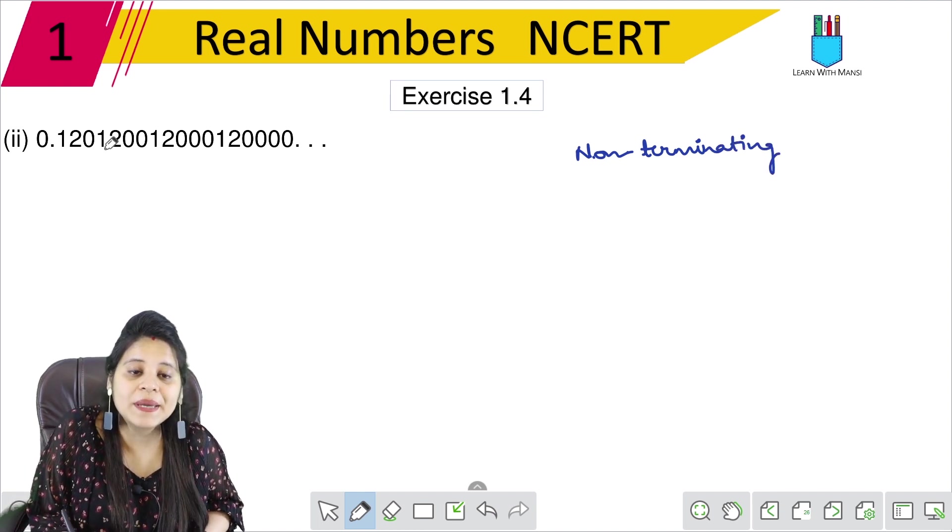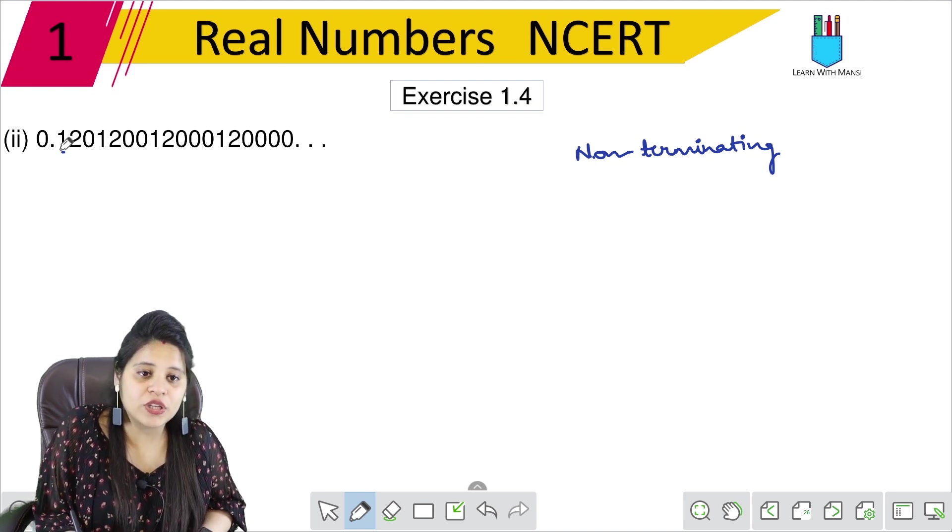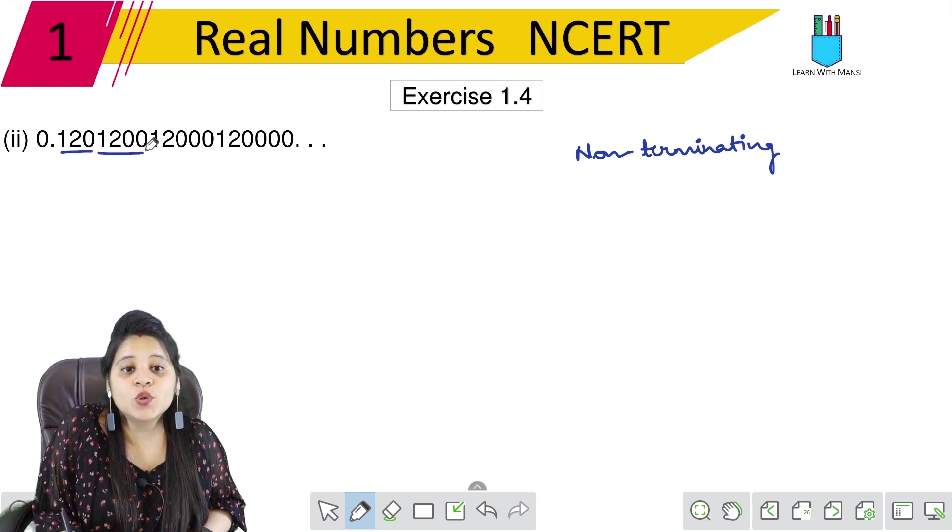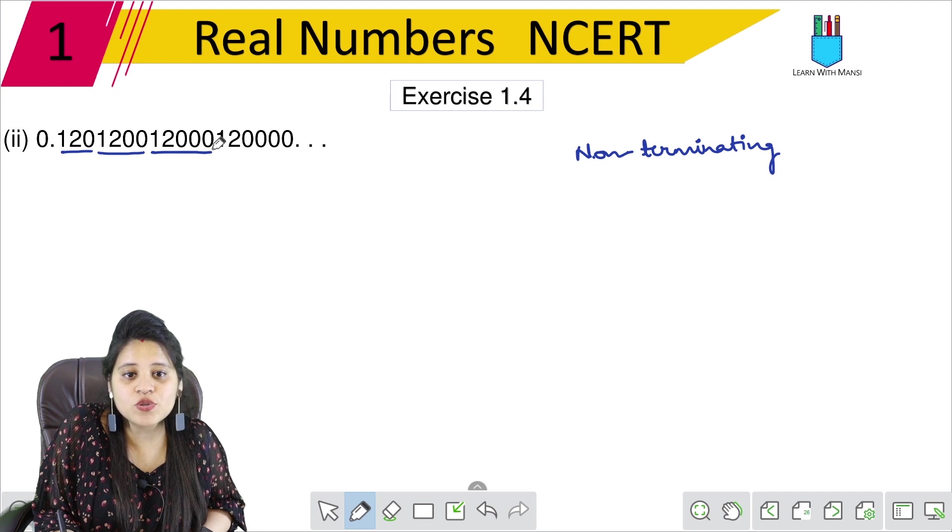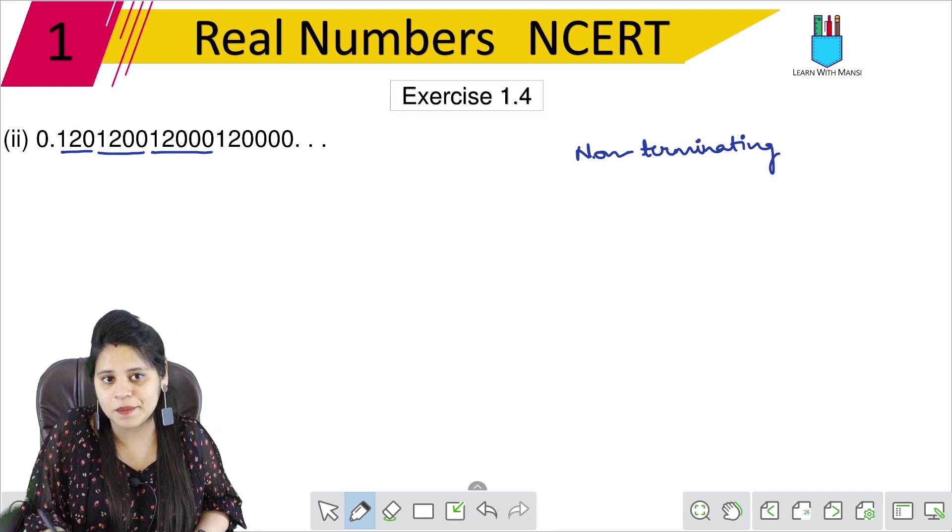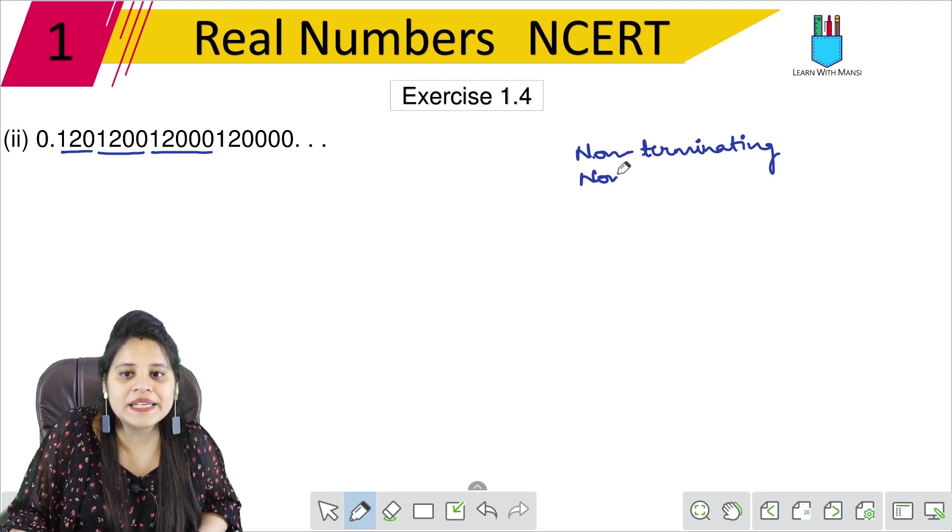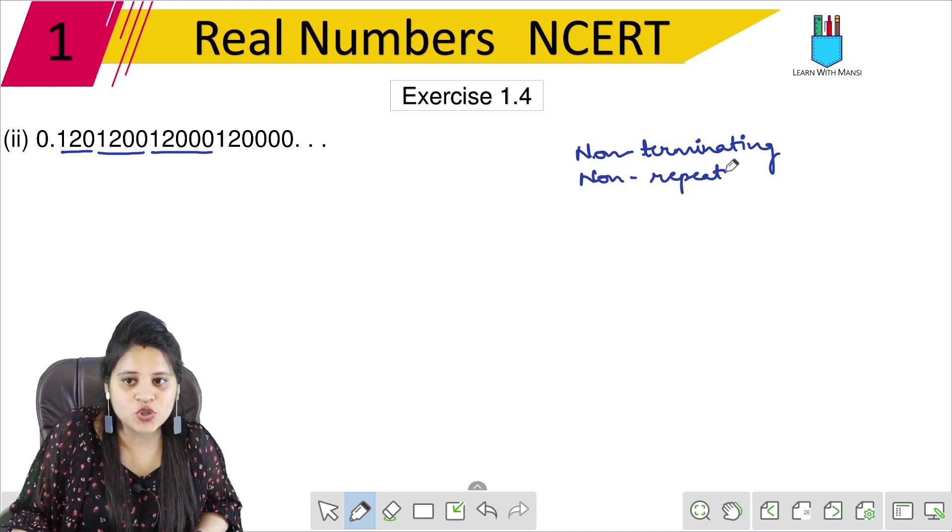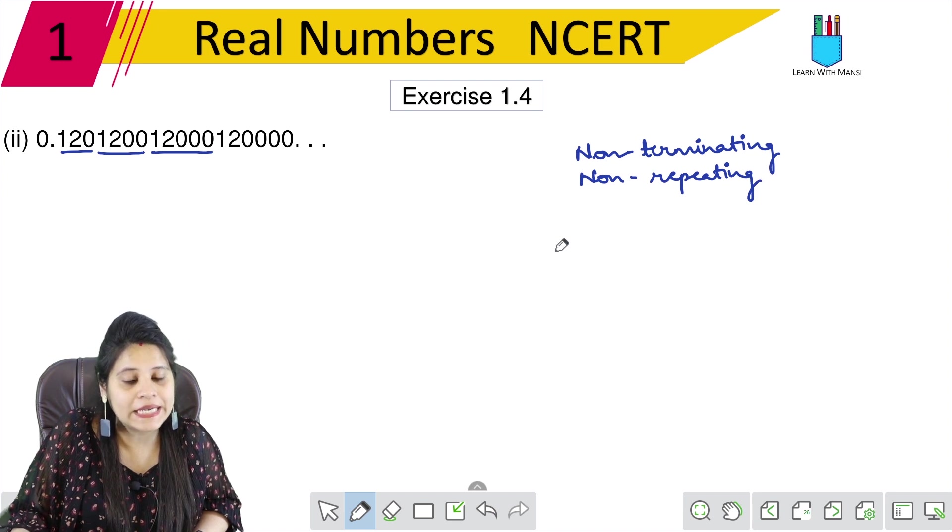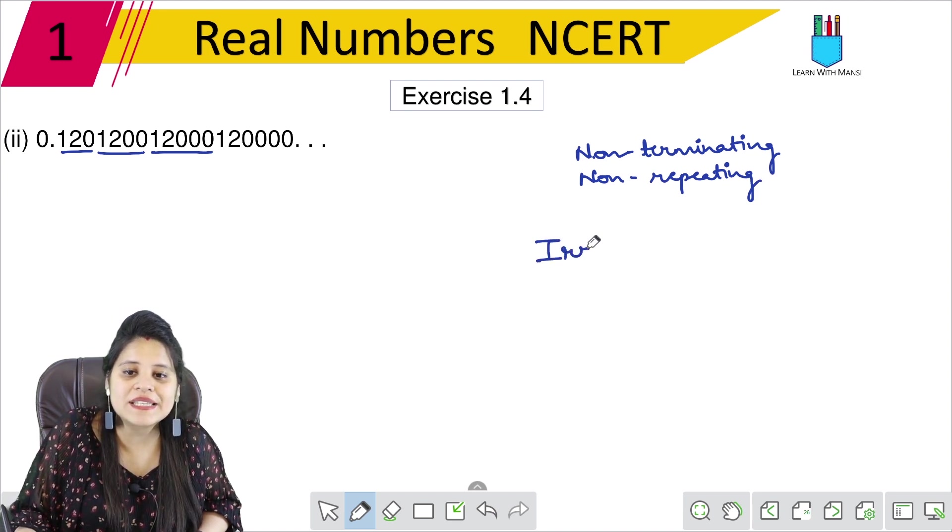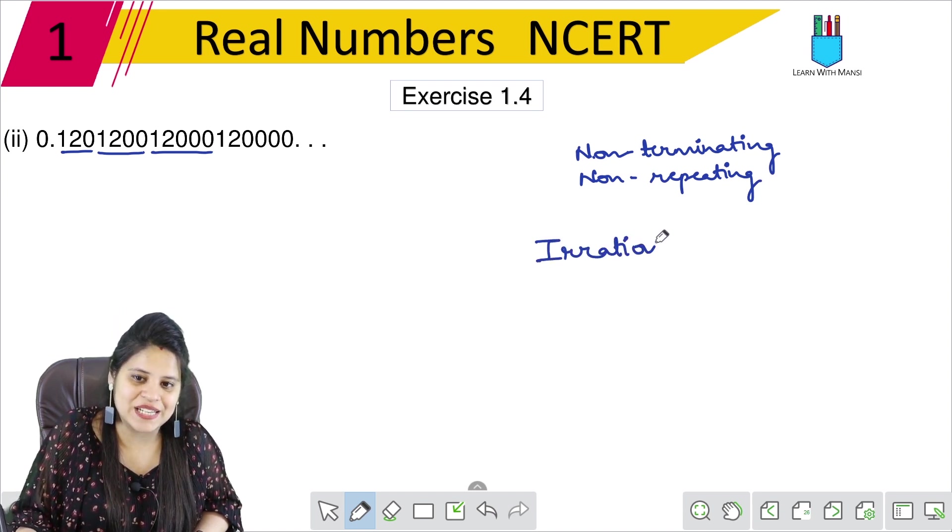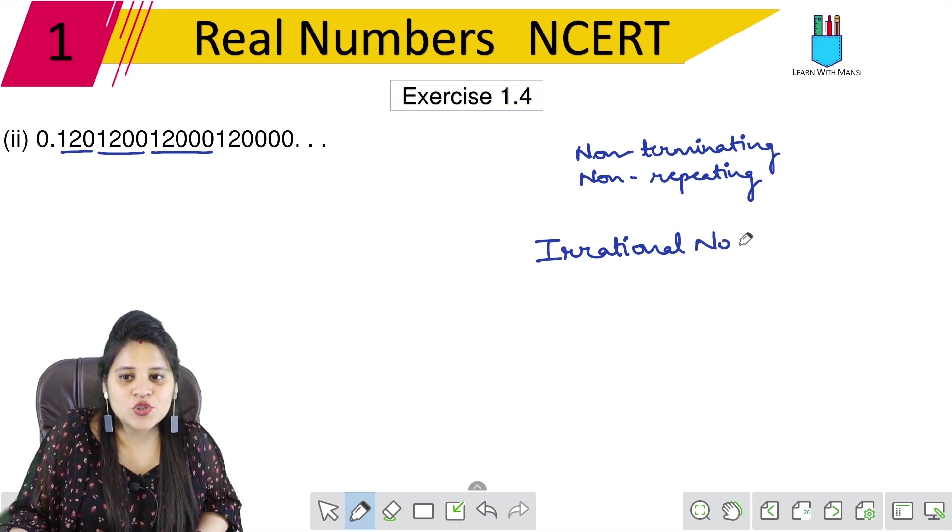Here it is not repeated. Because it was 1, 2, 0, then 1, 2, 0, 0, then 1, 2, 0, 0, 0. You can see, it will increase. It means that the exact same thing is not repeated. So non-terminating and non-repeating decimal expansion, that means this is an irrational number.